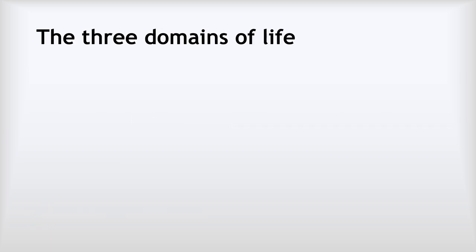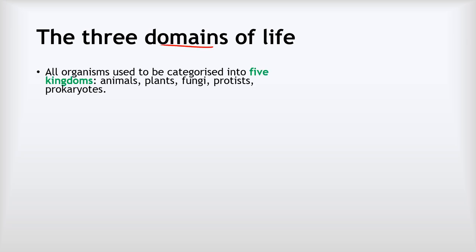Let's start by looking at what we call the three domains of life. This is about how we classify and put living things into groups. It used to be that all organisms were categorized into five different kingdoms: animals like us, plants, fungi like mushrooms, protists, and prokaryotes like bacteria. However, as we learned more about genetics and DNA and did more analysis of their genes, we realized there were lots of things that appeared very different but actually their genes were quite similar. Analysis of these genes showed us there was a better way to classify living things.